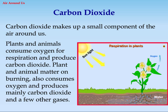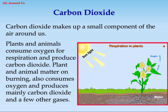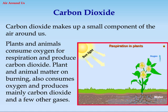3. Carbon dioxide. Carbon dioxide makes up a small component of the air around us. Plants and animals consume oxygen for respiration and produce carbon dioxide. Plant and animal matter on burning also consumes oxygen and produces mainly carbon dioxide and a few other gases.